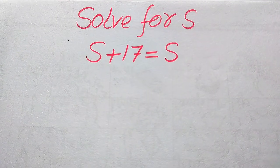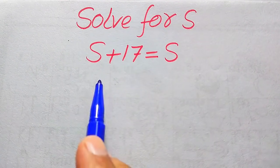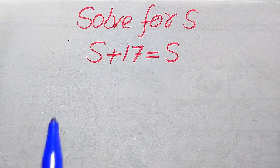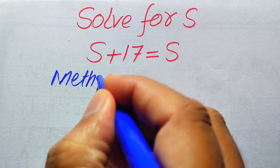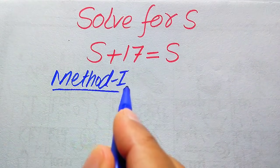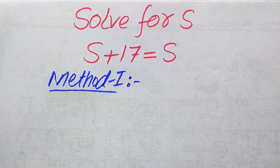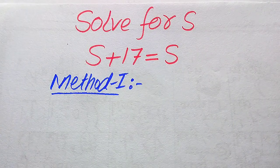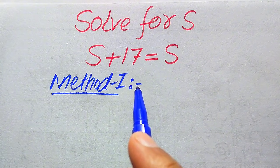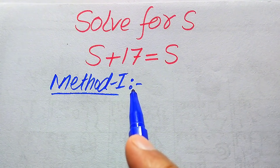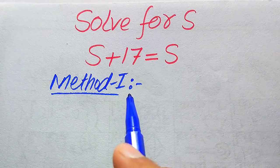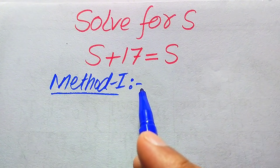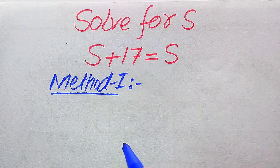Hello everyone. How to solve this problem for the values of s, if we have √(s + 17) = s. We solve this problem using two methods. In the first method, if the question asks you to find the values of s or the roots of the equation, use method one. If the question asks to determine the solution of the equation, you can directly use the second method.